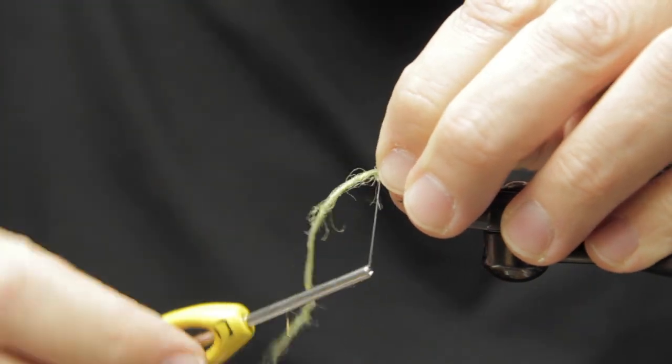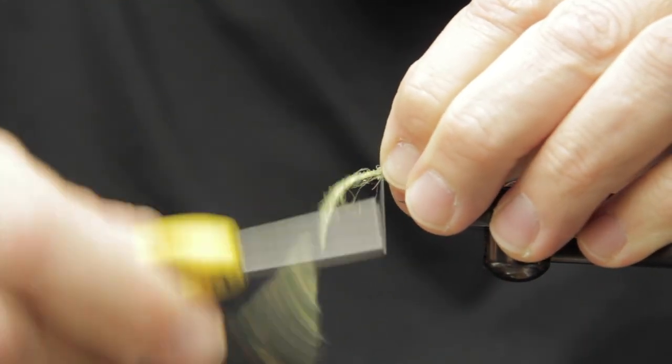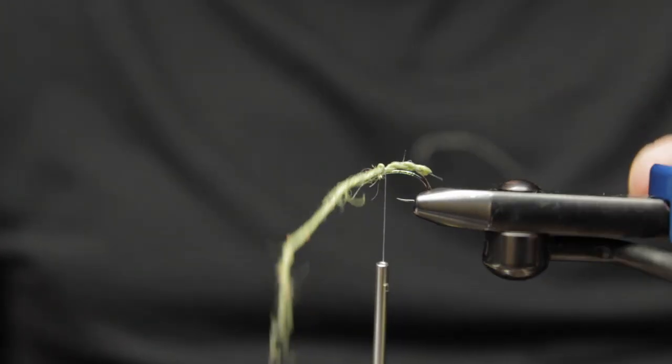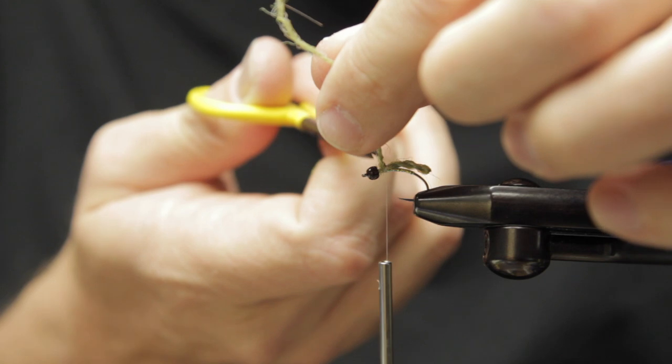So right there you can see that's the furling. Furled leaders are kind of an older deal, but they're actually still super cool for turning over flies. It's just turning twisted materials back over itself, creating like a weave.